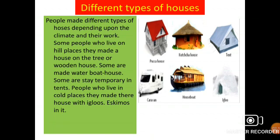Let's see different types of houses. People make different types of houses depending upon the climate and their work. Some people who live in hilly places make houses on trees or wooden houses. Some make houses on water. Some stay temporarily in tents. People who live in cold places make igloos, like the Eskimos.